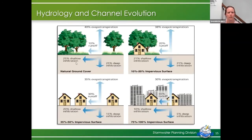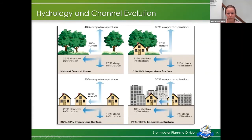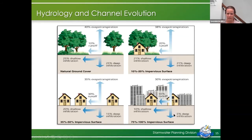Next we have hydrology and channel evolution. This diagram shows what happens with development over time. Looking back to when the George Washington sketch was made, much of the watershed was probably undeveloped — water was able to infiltrate into the ground, there was very little overland flow, and streams weren't getting overwhelmed. But as we start building houses, runoff starts increasing. We're sending so much water to streams that were only used to forested conditions with barely any flow — now we're not getting that deep infiltration, and all the runoff is going straight to the streams.